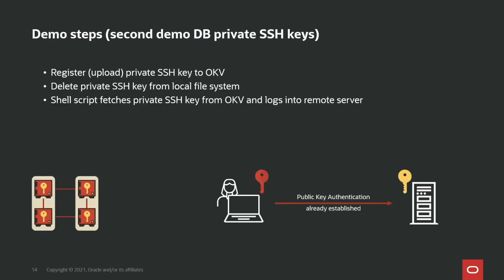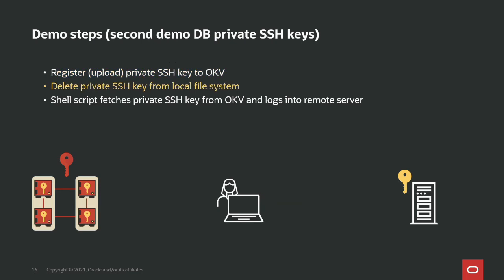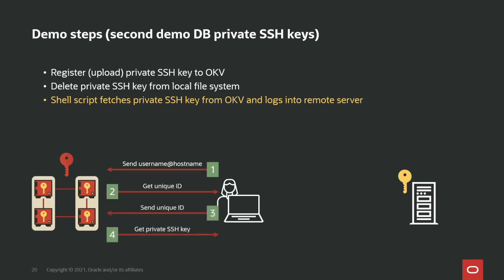In the next demo, we already have public key authentication established, so I can log into the remote host without providing a password. I will upload my private key into OKV, then use a shell script where I send username and hostname to OKV, get back a unique ID, send the unique ID back, and receive my private key. Since SSH requires the private key to exist on a file, we temporarily store the private key in a randomly generated file on a RAM disk, log into the remote instance, and then delete the private key from the hard drive — so the lifetime of that private key on the server is only a couple of seconds.